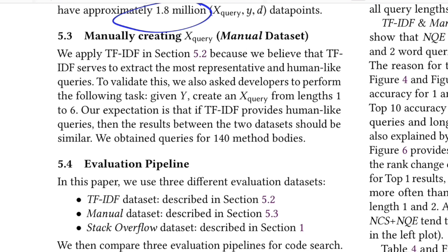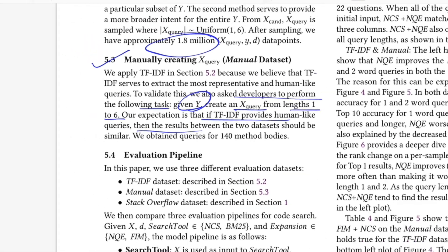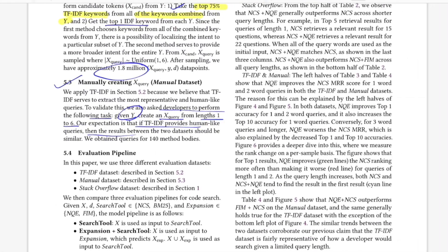The second method was manual generation. They asked developers to create x queries of length 1 to 6 given y — covering both short and long length queries — and wanted to see how well the TF-IDF method correlated with how humans selected words. This is how they created their x and y pairs and trained the encoder-decoder model.